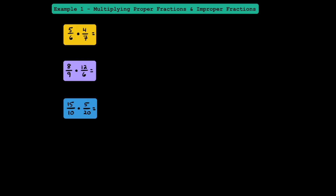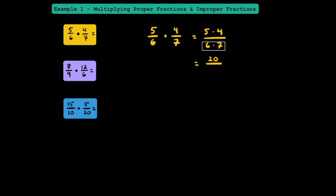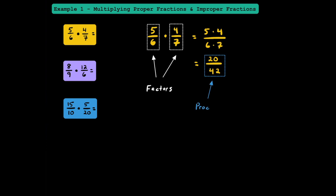In example 1, I'm going to go over how to multiply proper fractions and improper fractions. In this first example, we have 5 sixths multiplied by 4 sevenths. While we need common denominators when adding and subtracting fractions, we don't need common denominators when we're multiplying or dividing fractions. The most straightforward method is to multiply the numerators together and multiply the denominators together. When multiplying 5 times 4 in the numerator, we get 20. We multiply 6 times 7 in the denominator to get 42. 5 sixths and 4 sevenths are called factors, and 20 over 42 will represent our product.